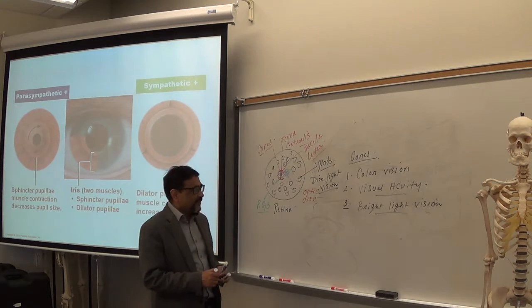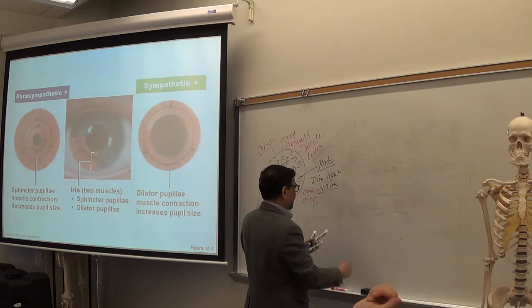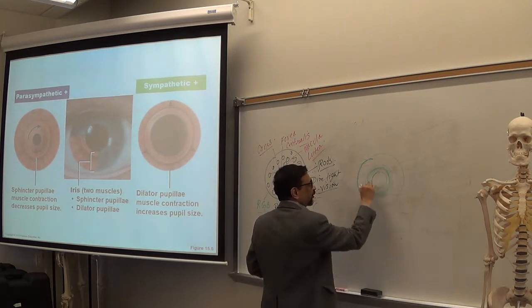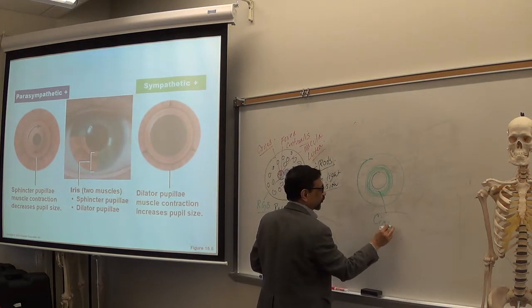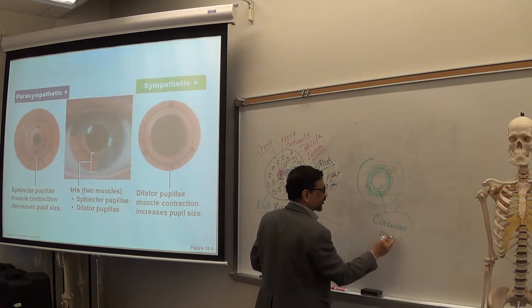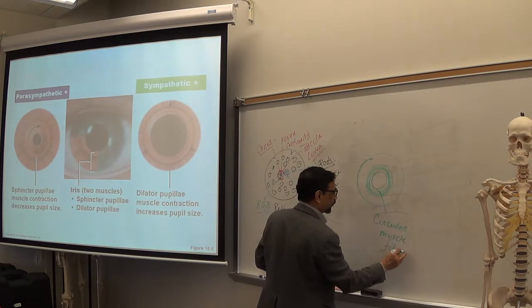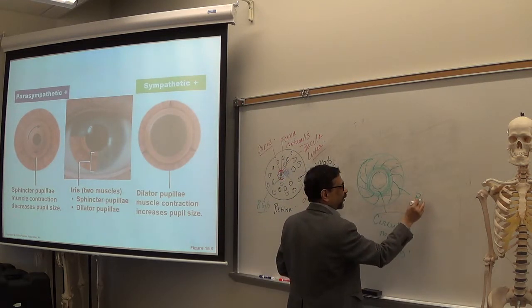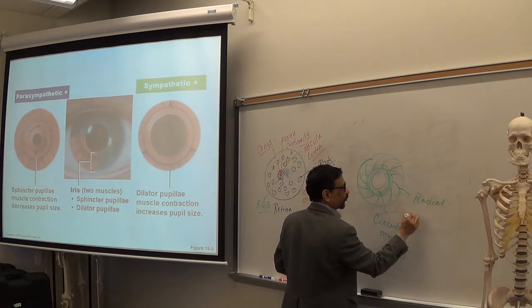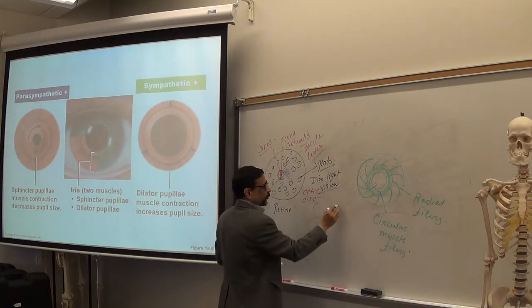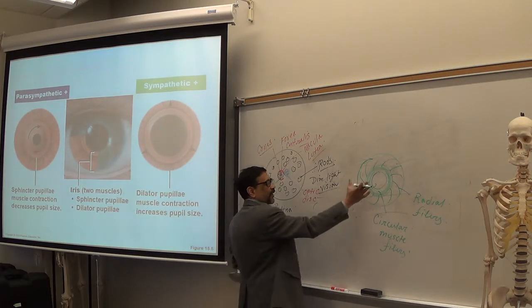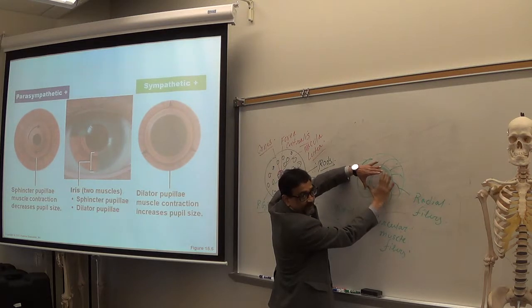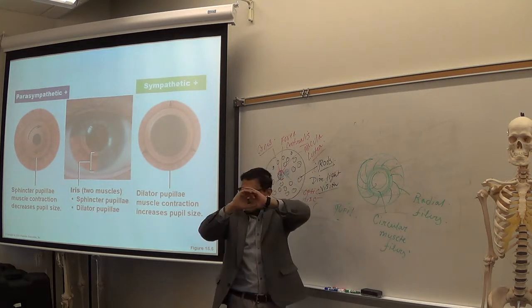Now, in the iris, you have two types of fibers. This is the iris. This is the pupil. Around the pupil, you have circular fibers, circular muscle fibers. Now you see, when the circular muscle fibers contract, what will happen? The pupil will get smaller. Make sense? Circular. Pupil will get constricted.